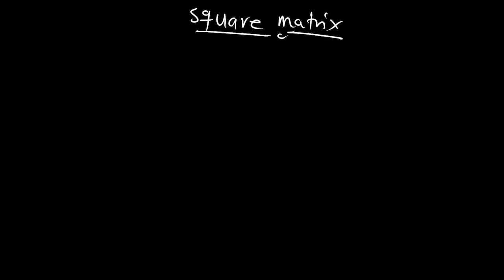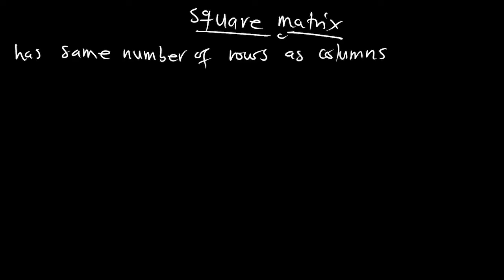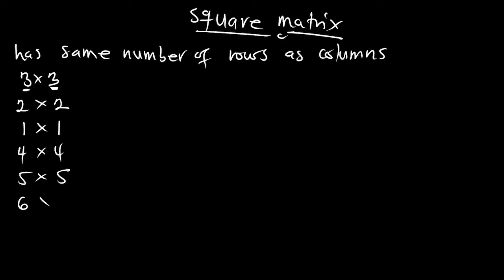A square matrix — what do we mean by a square matrix? A square matrix has the same number of rows as columns. So any time we see a matrix of the order 3×3, it is a square matrix — same number of rows as columns. 2×2, 1×1, 4×4, 5×5, 6×6 are all square matrices because the number of rows is equal to the number of columns.